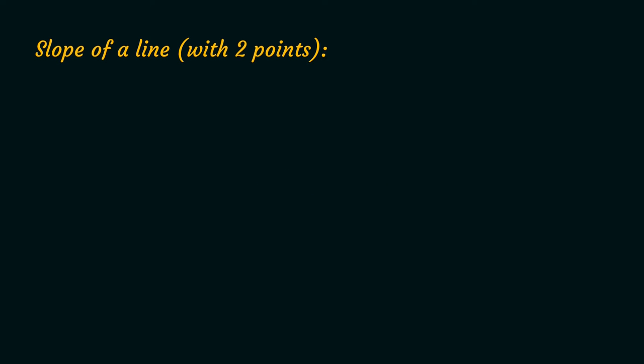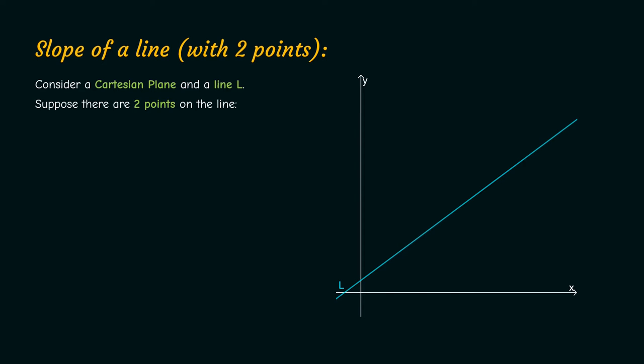Slope of a Line. Consider a Cartesian plane and a line L in it. Suppose you are given two points on the line P(x₁,y₁) and Q(x₂,y₂).